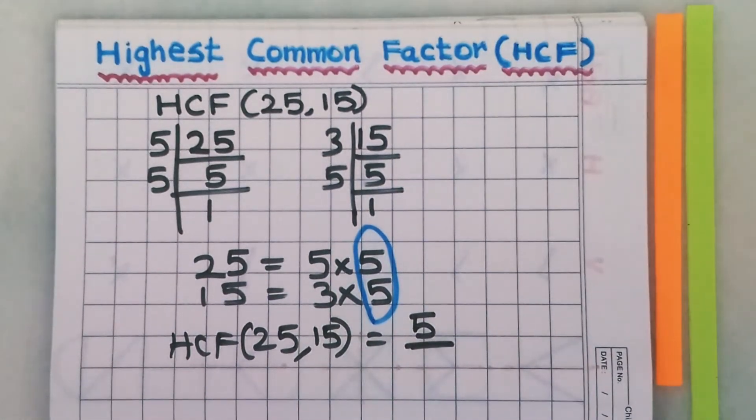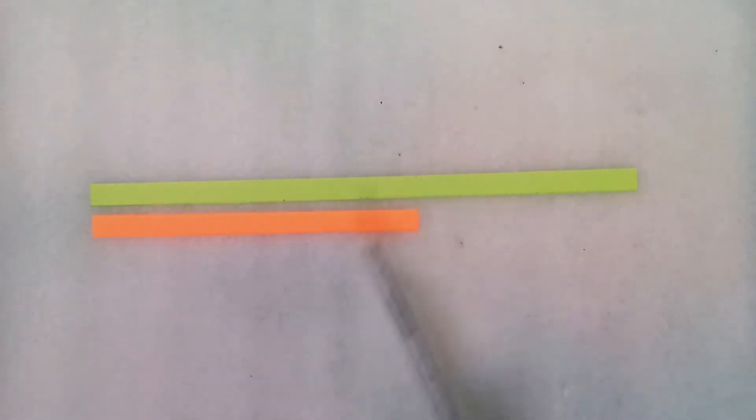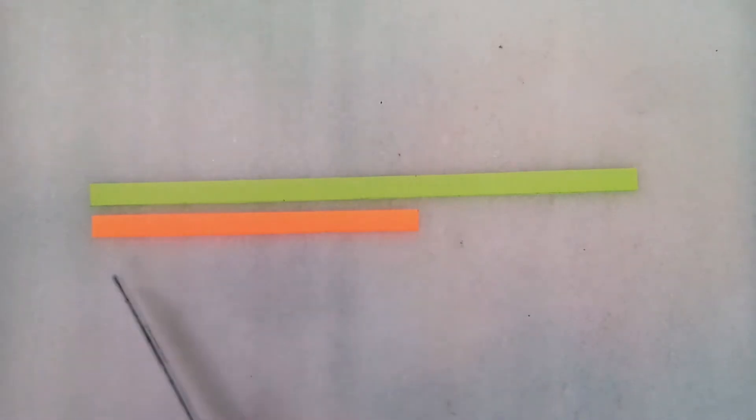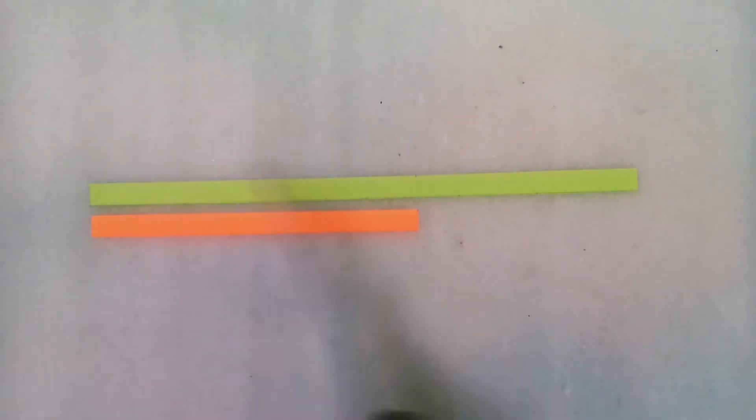Now we will verify this using the paper cutting method and check that the answer is 5. Take papers of two different colours: in the green strip, mark 25 units, and in the orange strip, mark 15 units, because the two given numbers are 25 and 15.